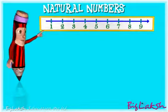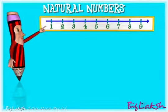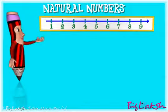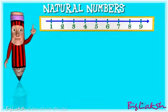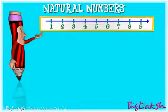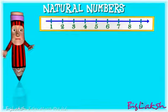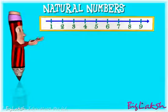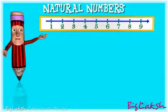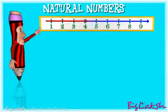You cannot see zero on the number line because natural numbers do not contain zero. Therefore, they are also called counting numbers. You can notice that natural numbers extend from 1 to infinity.